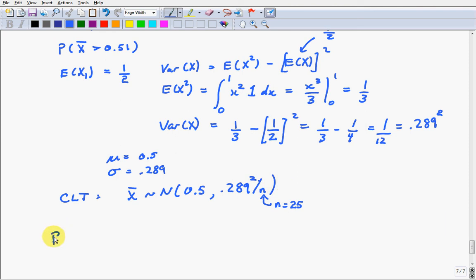We want to figure out the probability that x bar exceeds 0.51. That would be the average cost per game. And so that's the same as saying the probability that x bar minus a half over 0.289 over 5. That's sigma over root n, n is 25, exceeds 0.51 minus 0.5 over 0.289 over 5.